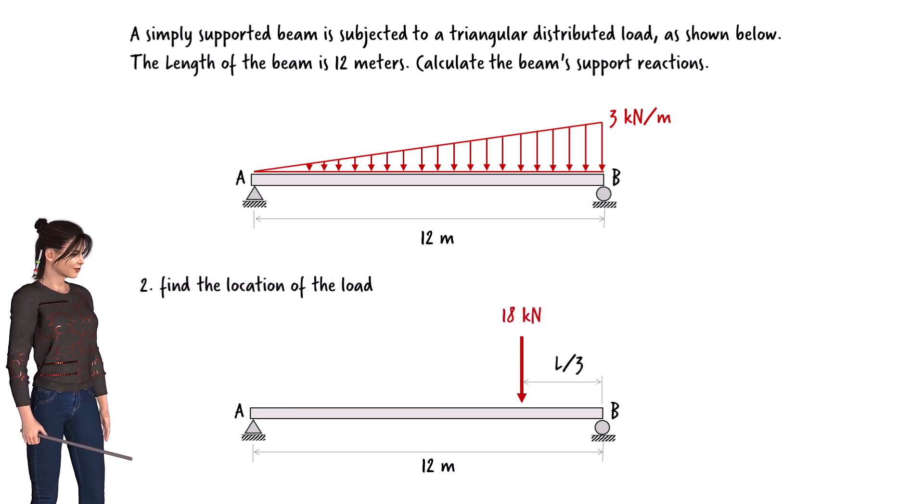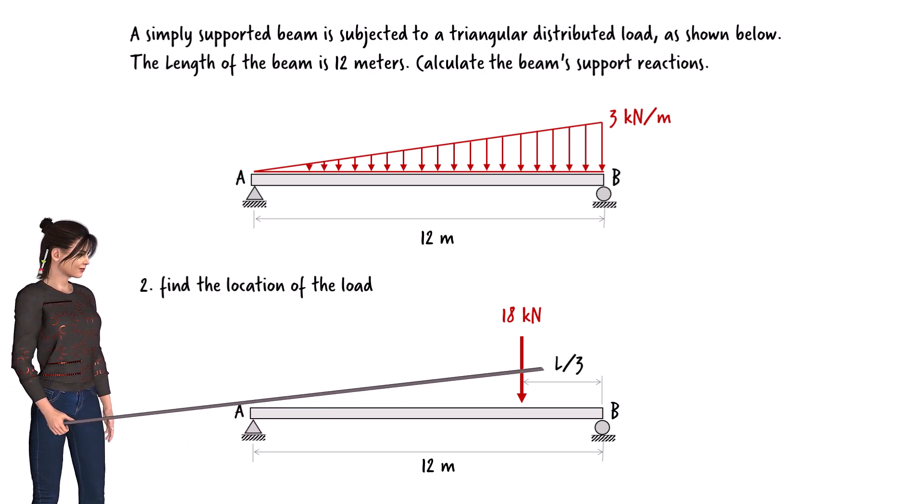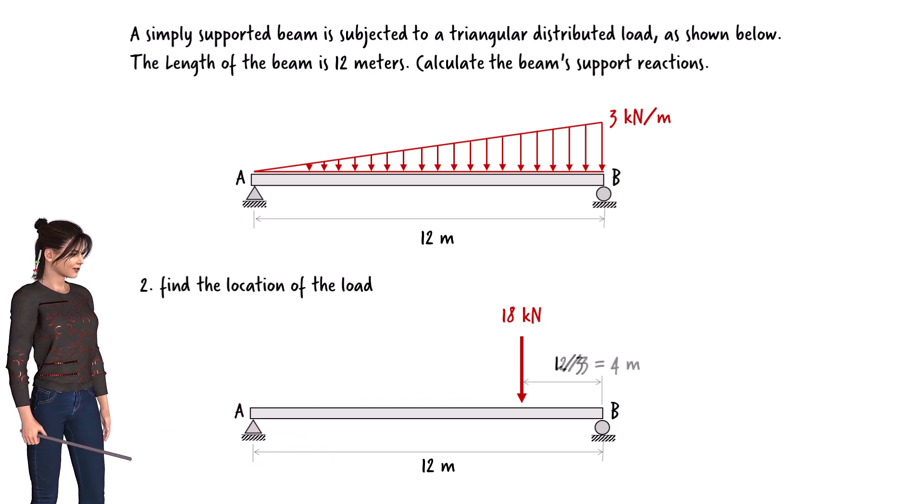Step 2: Find the location of the total load. For a triangular load with zero intensity at one end, the location of the total load is one-third of the distance from the peak intensity end. So the location of the load is one-third times length of the beam, 4 meters from the right end of the beam.